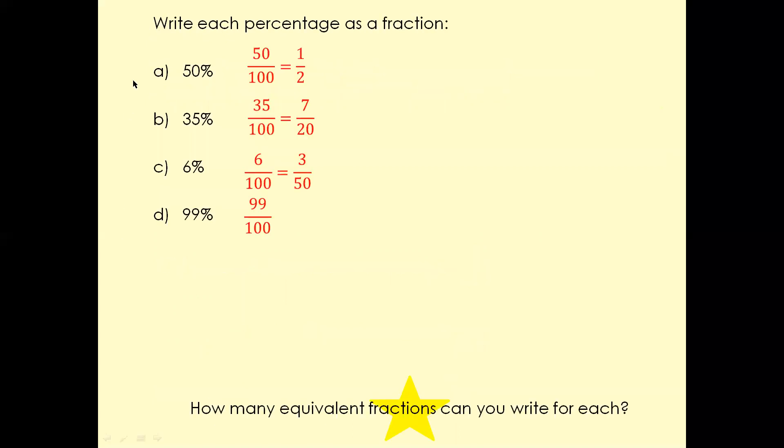Now there are some questions here for you to give it a go. So write each percentage as a fraction. For example, 50% means 50 parts per 100, and when you simplify that, that is going to be 1/2. 35% is 35 parts per 100. When you simplify that, you'll get 7/20.